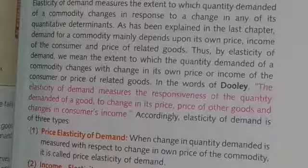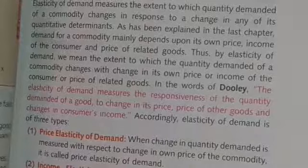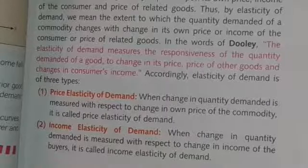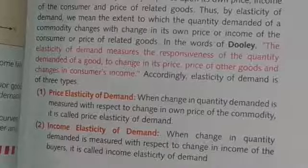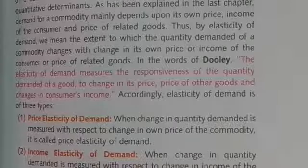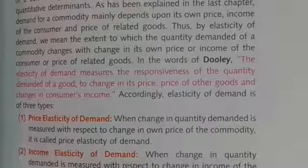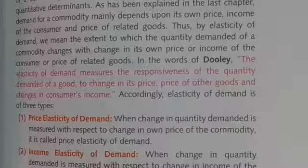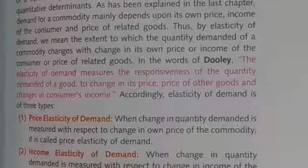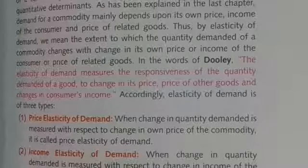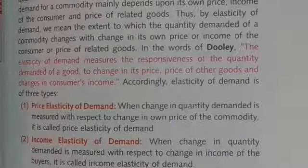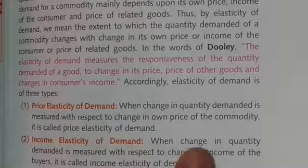There are three types of elasticity. First, price elasticity of demand — when change in quantity demanded is measured with respect to change in the own-price of the commodity. Second, income elasticity of demand — when change in quantity demanded takes place due to the change in income of the buyer.